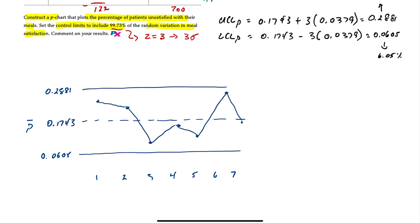We can now comment on the results. Because all observations of the proportion of unsatisfied patients fall within the upper and lower control limits, we can say the process is in control. The variation within the control limits is fairly random, and there doesn't seem to be much of a trend. And that's how you do a p-chart.